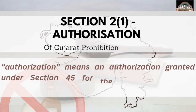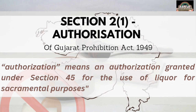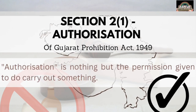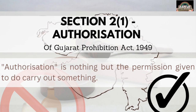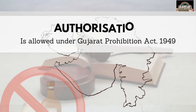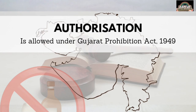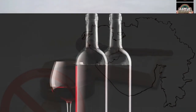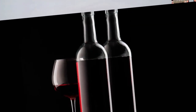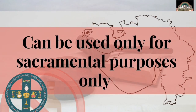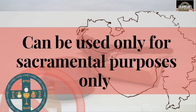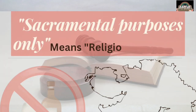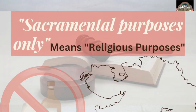The first definition we are going to deal with is Authorization. Authorization is the permission given to do something or carry out something. Here, the authorization is given by the Gujarat Prohibition Act to use liquor or alcohol — which is banned in the state of Gujarat — for some sacramental purpose only. Sacramental purpose means the use of liquor for religious purposes, as given under Section 45.